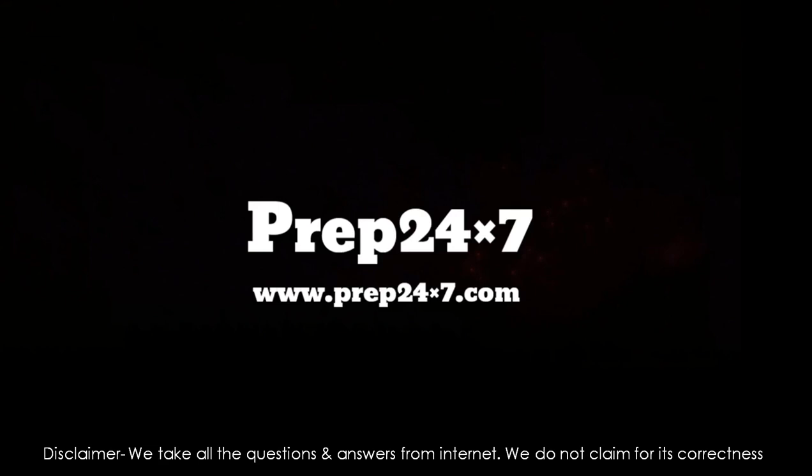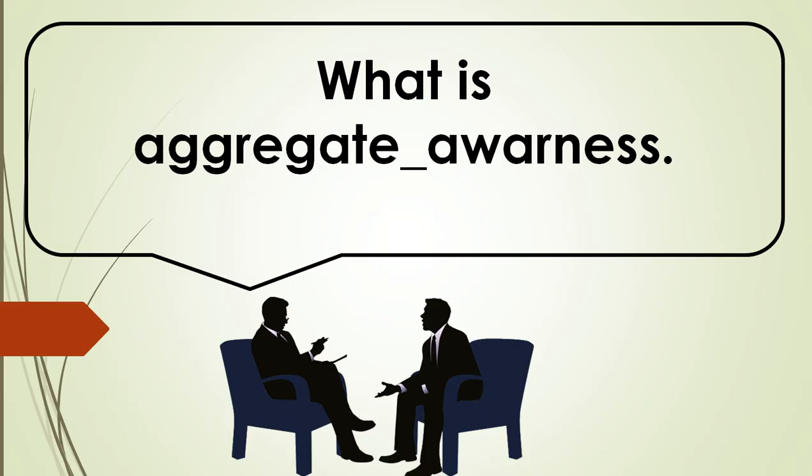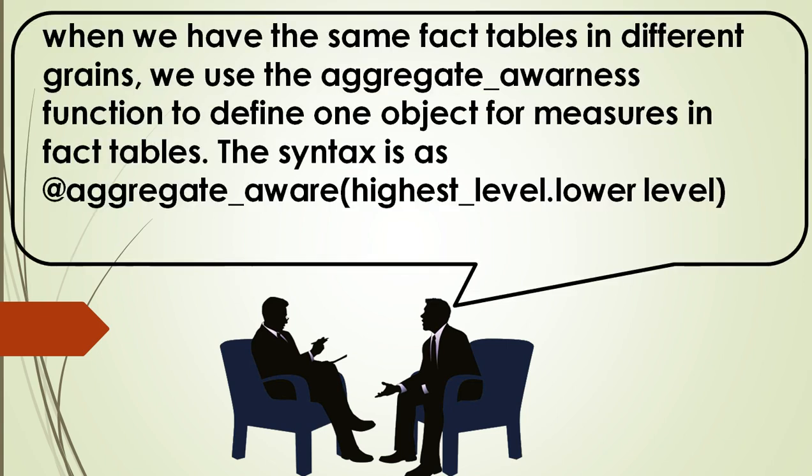Welcome to prep 24 into 7. Let's start with our question: what is aggregate_awareness? The answer is: when we have the same fact tables in different grains, we use the aggregate_awareness function to define one object for a measure in fact tables.